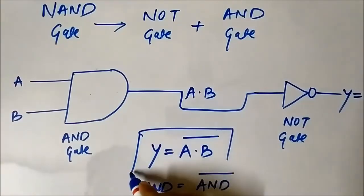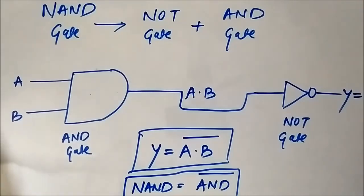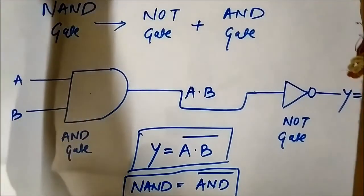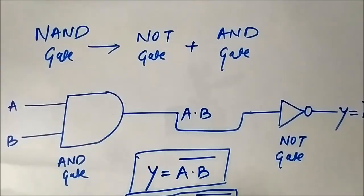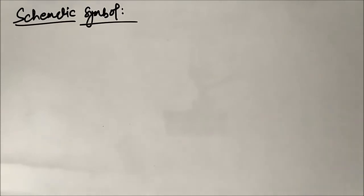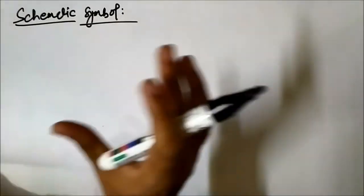NAND is the complement of AND. Now let us discuss the schematic symbol and the truth table of the NAND gate. The schematic symbol of the NAND gate — since the NAND gate is a combination of the AND gate and the NOT gate — is almost similar to the AND gate with a subtle difference.